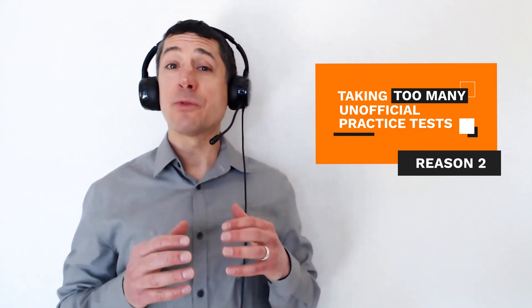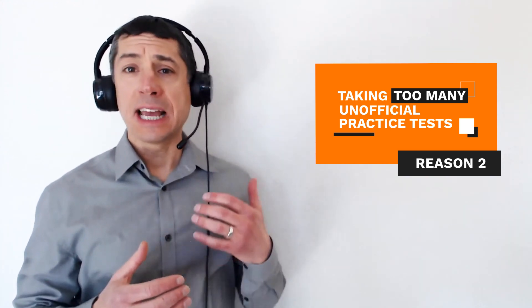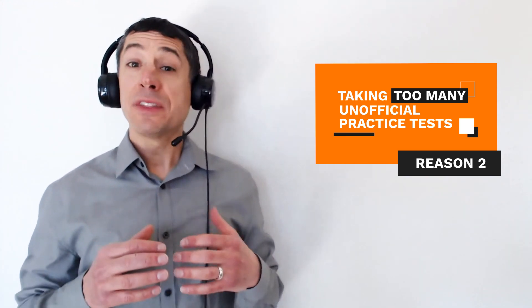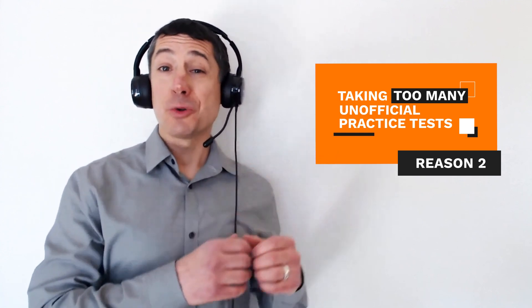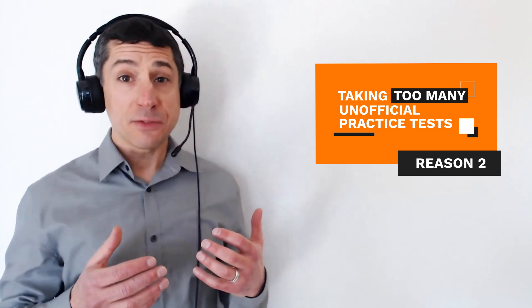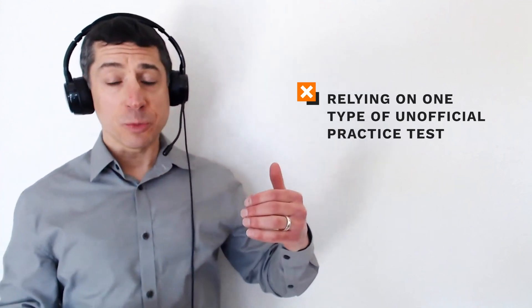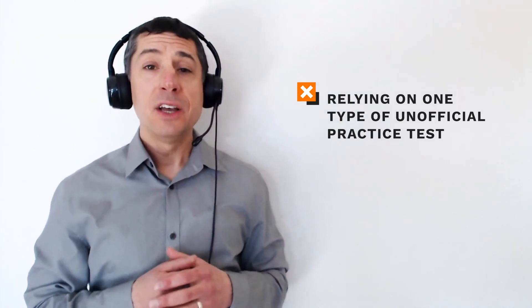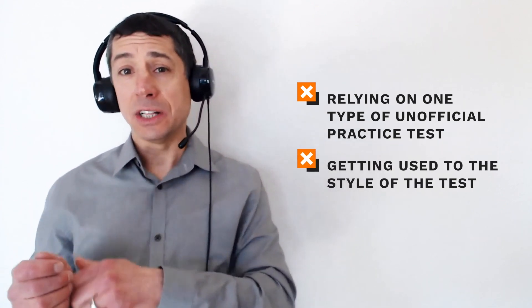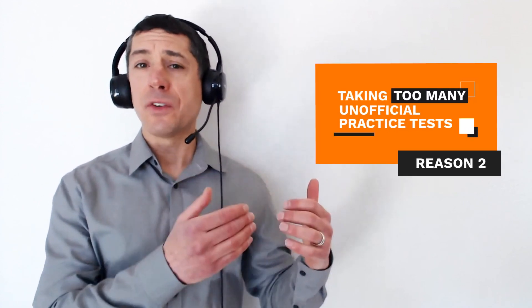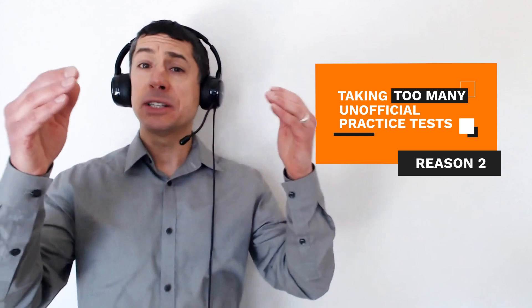Reason number two is that you might be taking far too many non-official practice tests. One of the really important things to understand about the GMAT is that the GMAT spends several thousand dollars developing, editing, testing, and perfecting every single test question. And even the very best test prep companies can't possibly compete with that. So we often see students whose non-official practice test scores are 100 points or even 150 points different from their actual GMAT scores. In particular, if you've been relying heavily on one particular type of non-official practice test, for example, if you've been doing the GMAT club tests, you'll get used to the style of writing of those tests, and you're going to get better and better at that style. And then when you go to take an actual exam, you're going to find the style very jarring, and the content might be different, and you might experience a really severe drop-off.